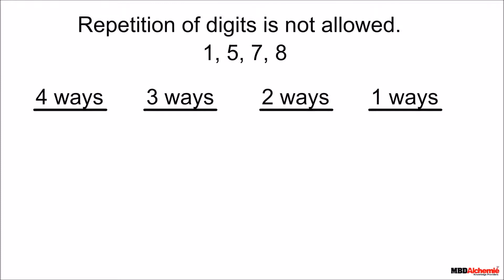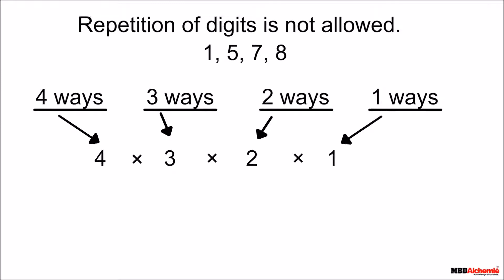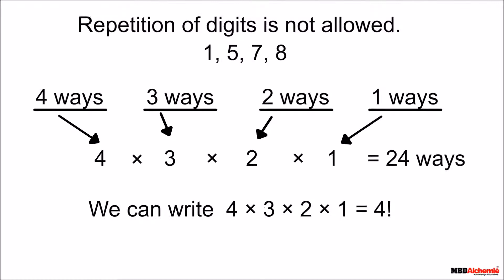So the total number of ways to arrange the given digits is 4 multiplied by 3 multiplied by 2 multiplied by 1, which is equal to 24 ways. We write the multiplication of 4 into 3 into 2 into 1 as 4 factorial.